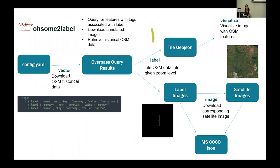Our friends in Heidelberg have created a tool called OSM-to-Label which allows you to create a config that indicates which OpenStreetMap keys and values map to the labels you're using for your model. It creates an Overpass query to download those features and tile imagery to a given resolution with those labels, then marries that with the satellite image into an MS COCO JSON file which is used to train your model.